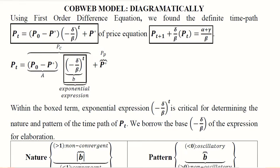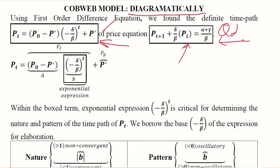In the last video we developed the framework of the cobweb model. Now we will try to analyze it diagrammatically. We will refer to the time path developed previously, and the first order difference equation equivalent of this cobweb model, developed by equating Qd and Qs within a certain time period. This is the elaboration of the time path value of capital A — the exponential expression — which is the complementary function.